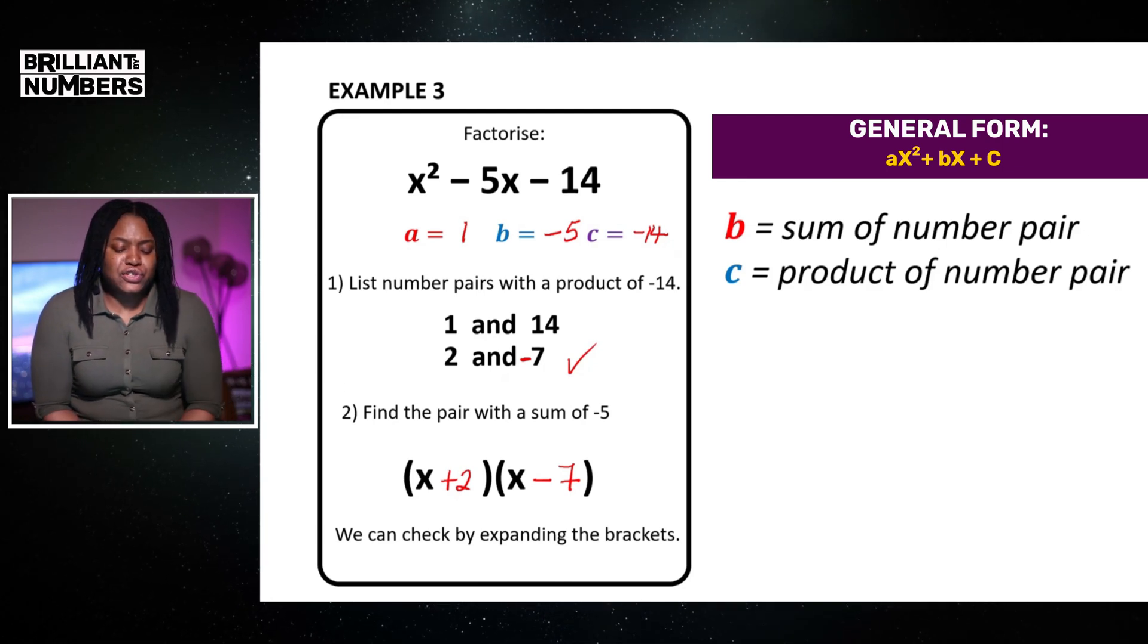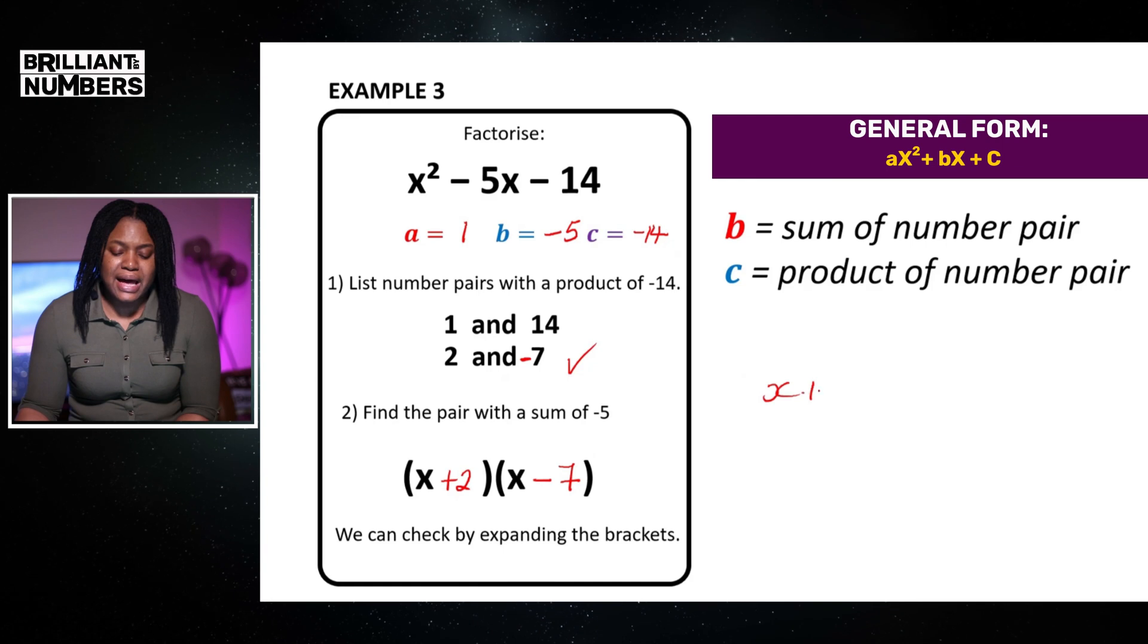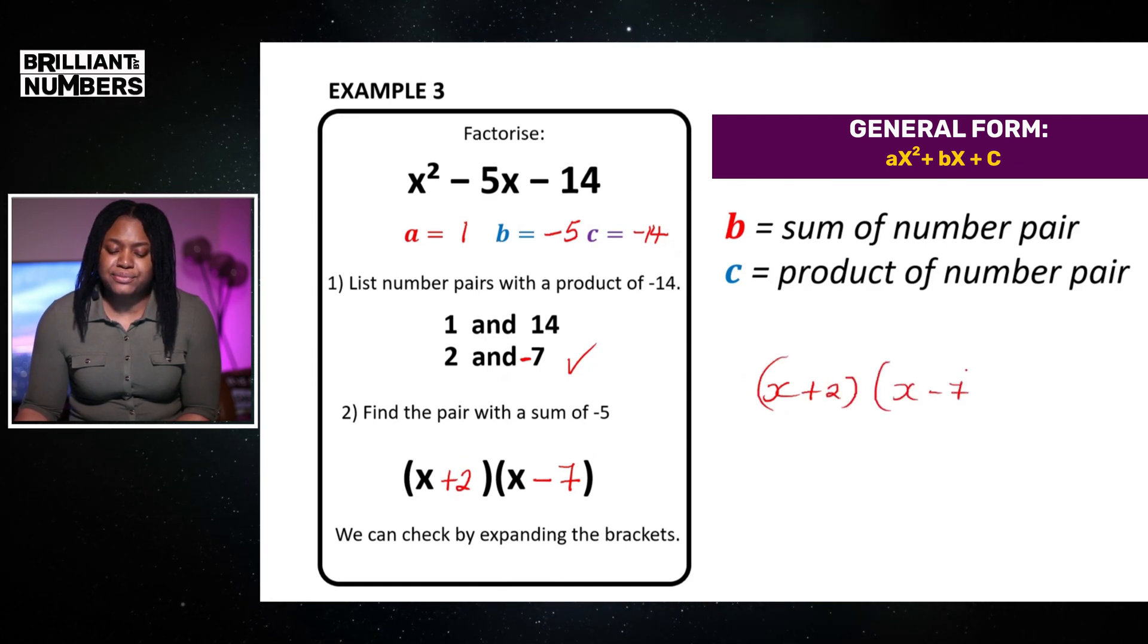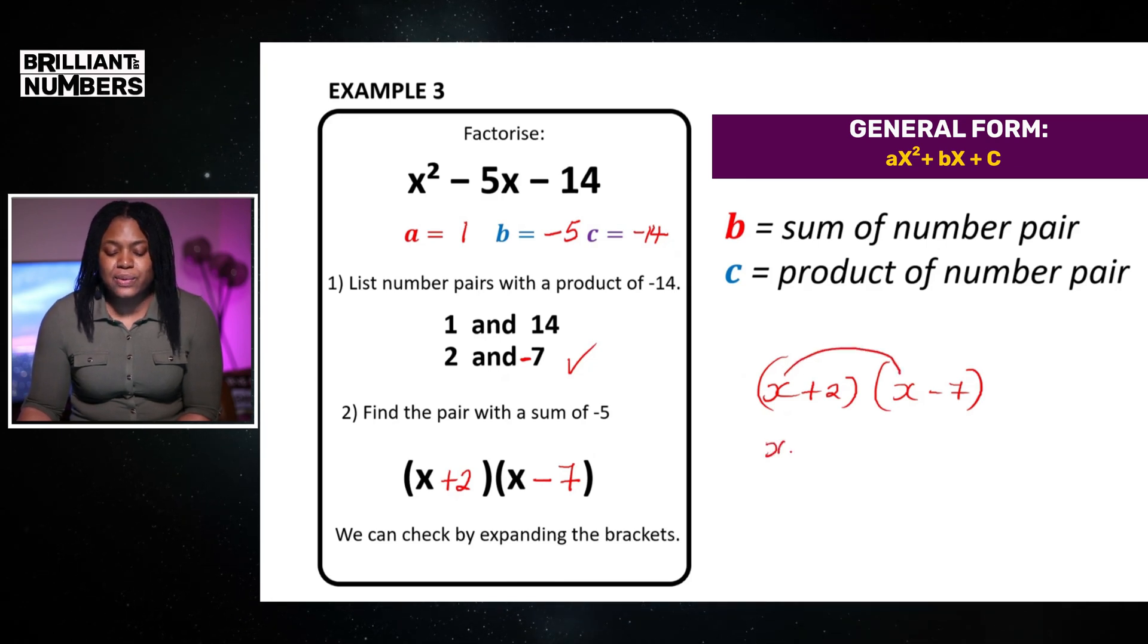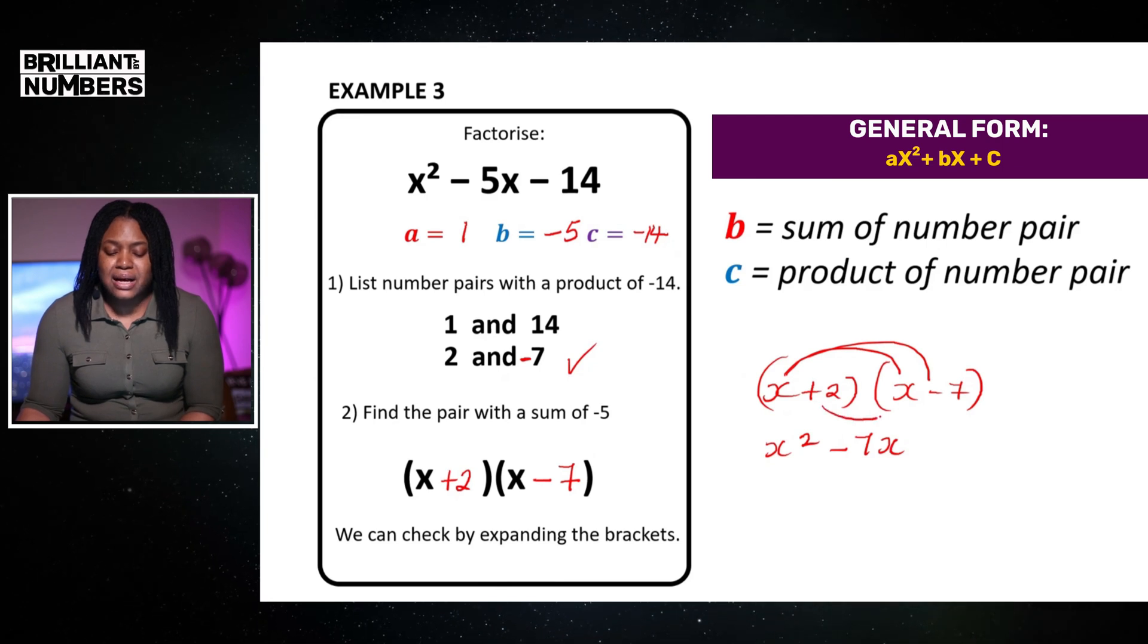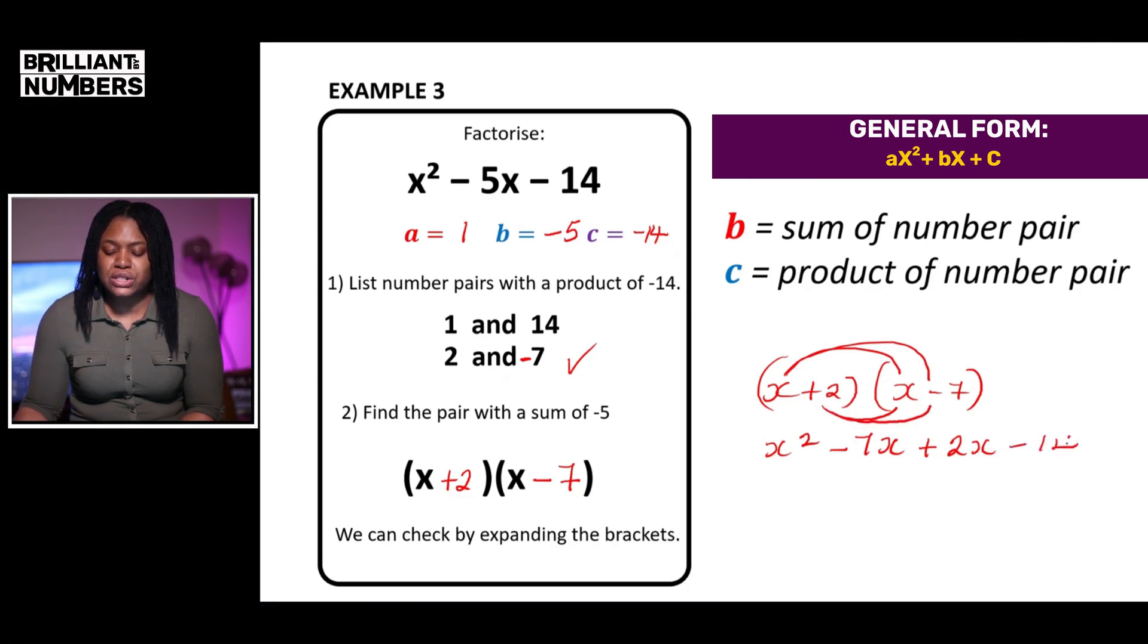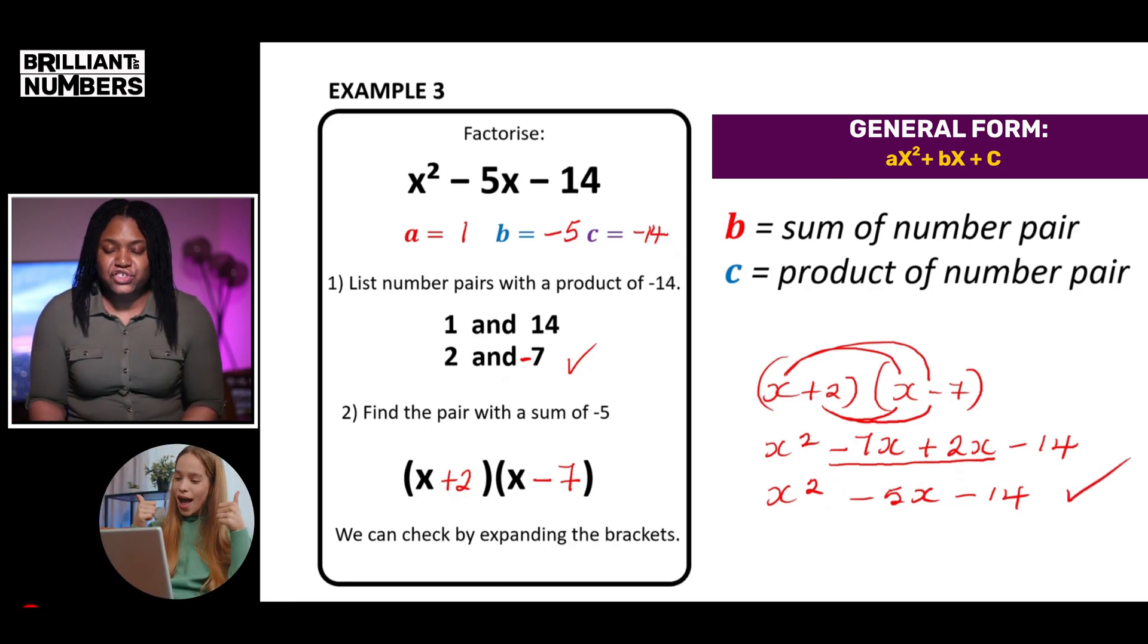And, in summarizing, I'm just going to expand the brackets just to show you how you can prove that the answer is correct. So, I've got x add 2 and x minus 7. So, I need to do x times x which is x squared and x times by minus 7. Very important here is minus 7x. x times by 2 is positive 2x and positive 2 times minus 7 is minus 14. I then need to simplify the b term. So, I'm left with x squared minus 7 add 2 is minus 5 and my variable is x and minus 14. Here, we can see that we have gotten back to the original expression and this is how I know that my answer is correct.